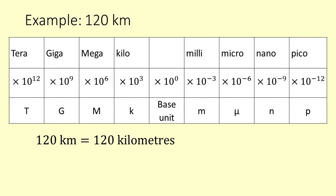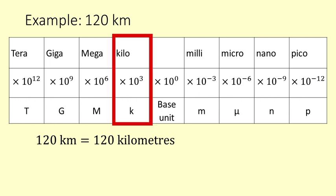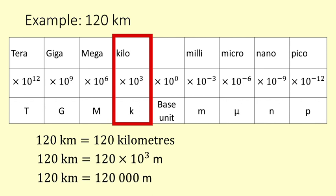120 km stands for 120 kilometres. To give the distance in metres you can replace the kilo with times 10 to the power of 3, or you can multiply the number by a thousand.